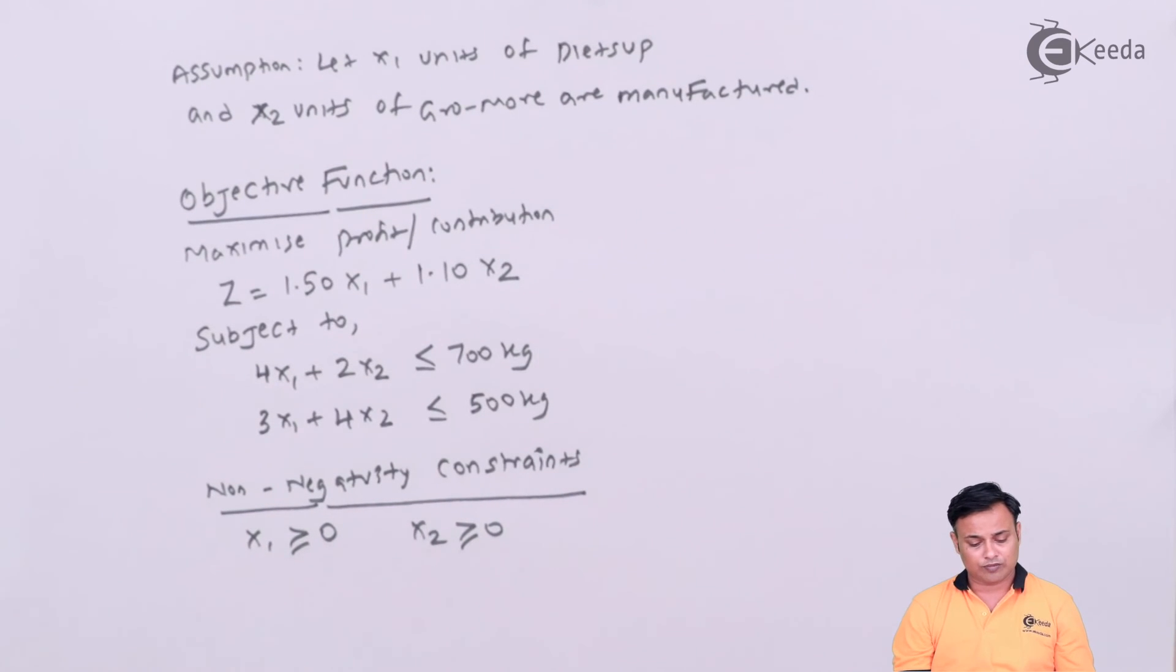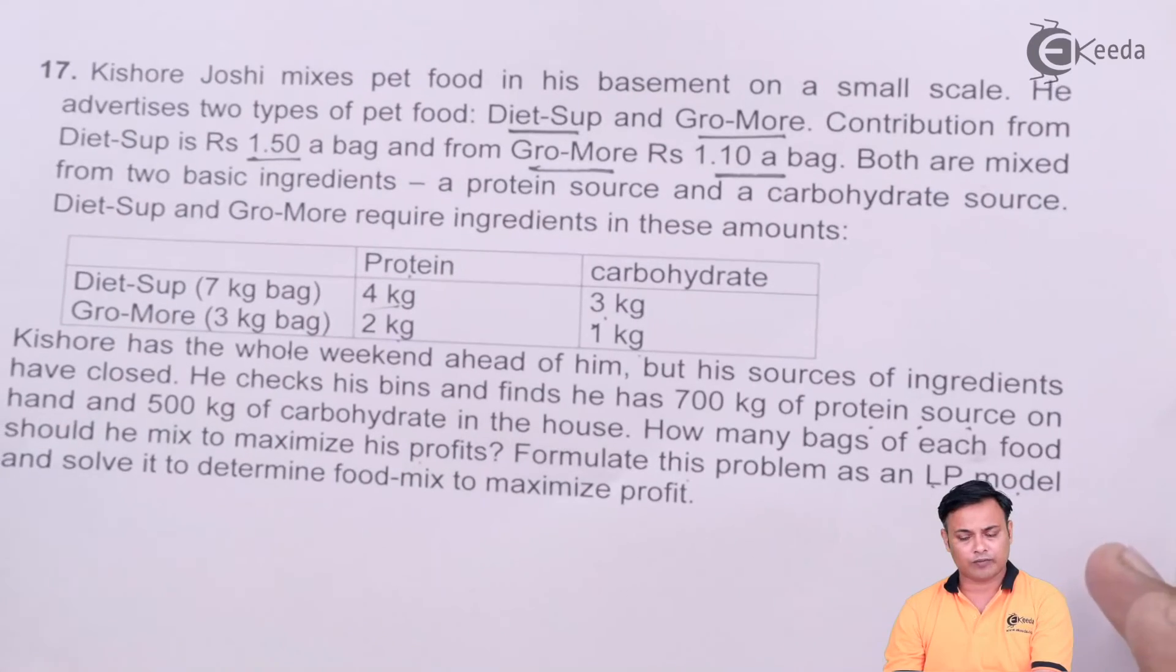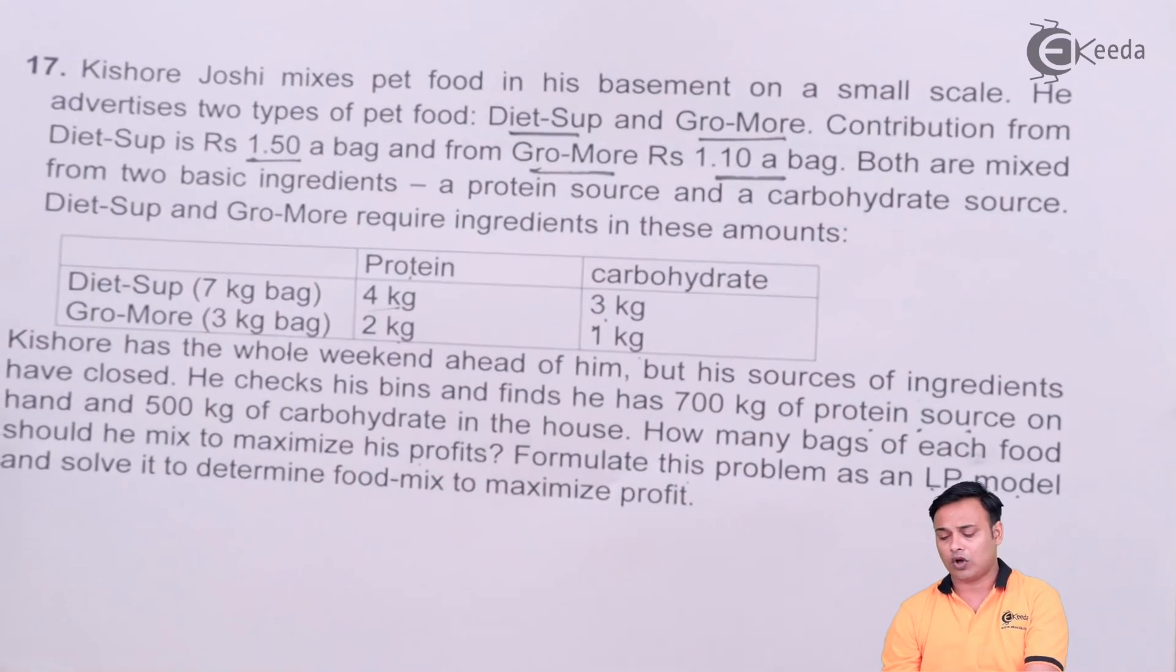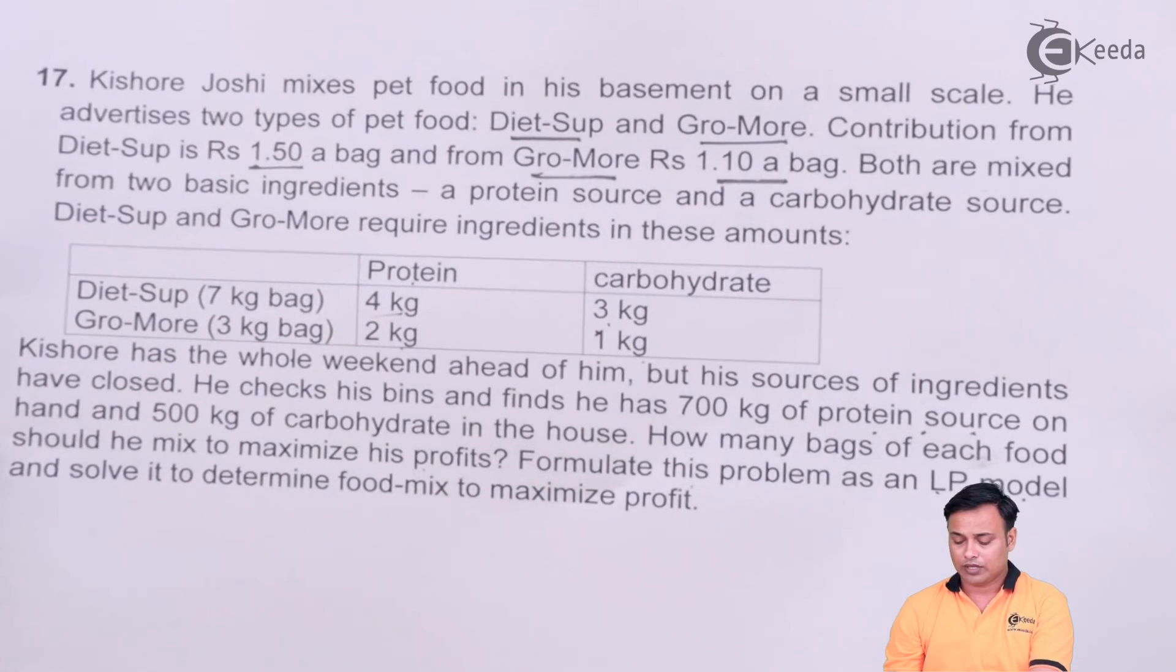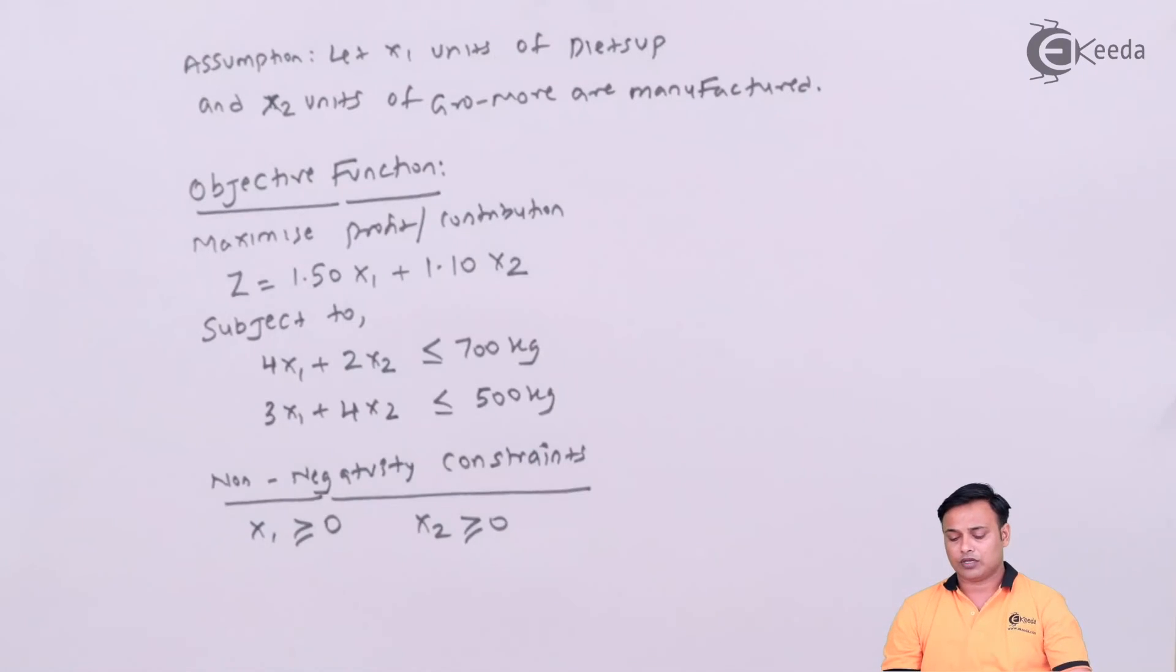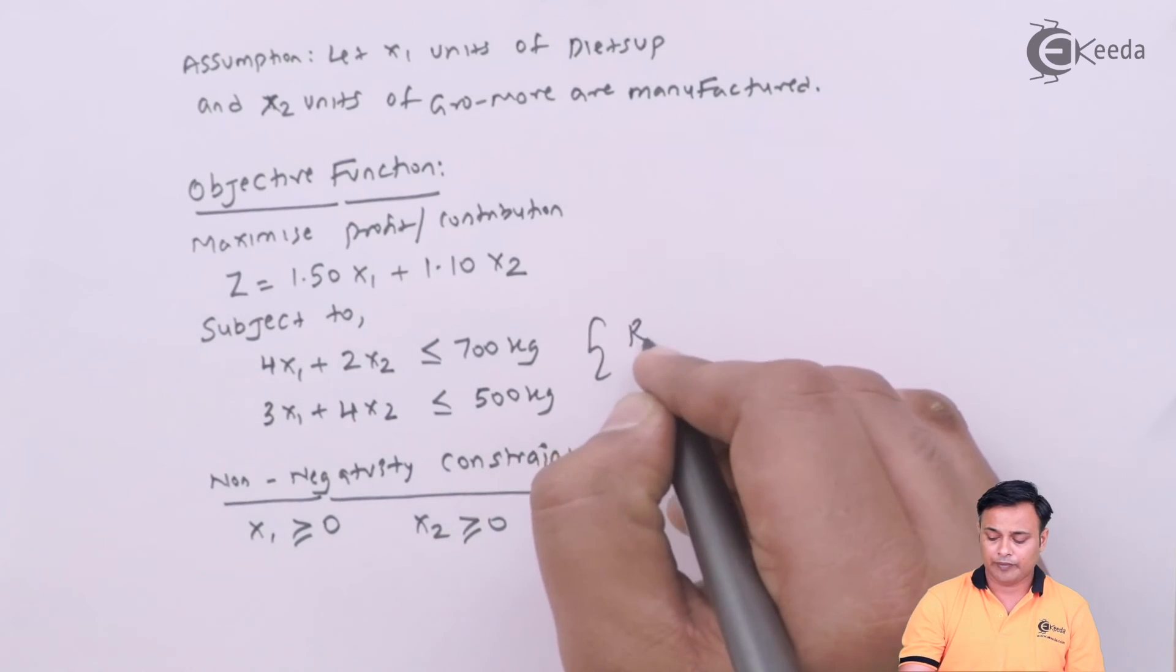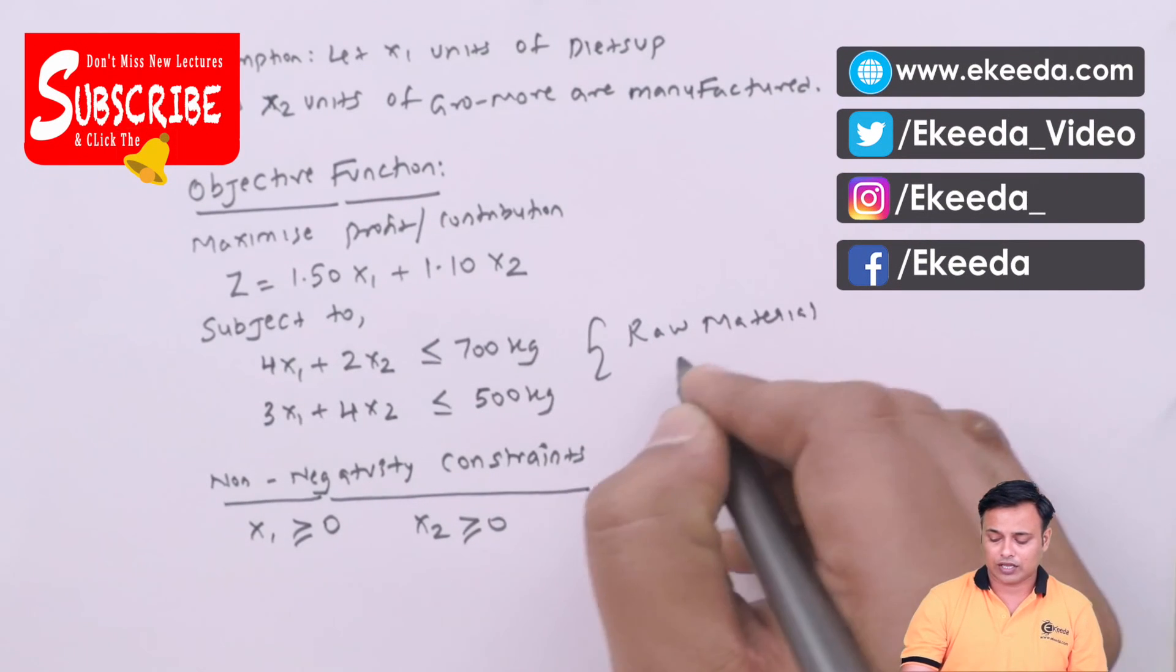With this we are done with the problem. We had two different food mixes here, pet food mix, one was Diet-Sup and one was Gro-More. And we were given almost all the information readily in the problem. We need not calculate anything, and based on that we were supposed to formulate this as a problem. We have objective function and then we have two constraints for the raw material constraints for which limited quantity is available.